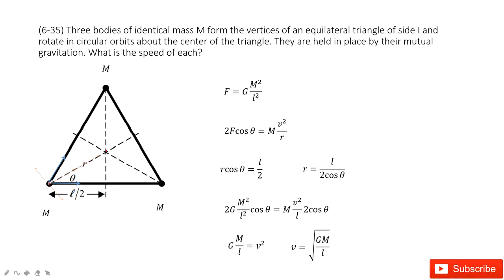We take this one as an example. The forces acting on this body are the gravitational force between this one and this one, and also the force between this one and this one. Each gravitational force is G m times m divided by L squared, because each side is L. And these are three identical masses.